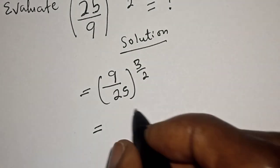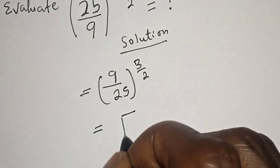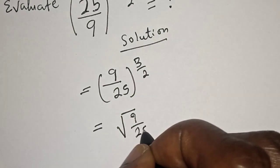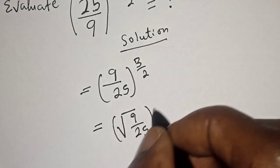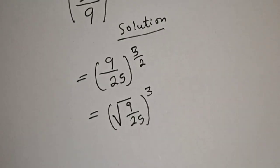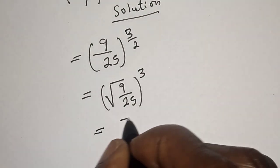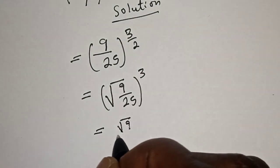This is equal to the square root of 9 over 25, all raised to power 3.